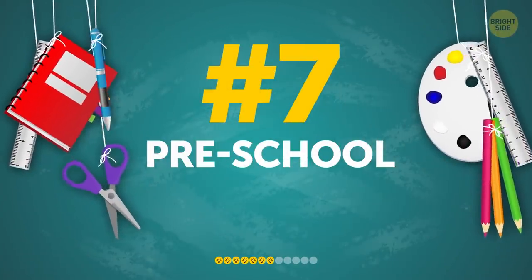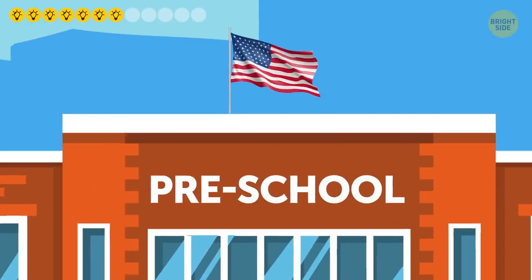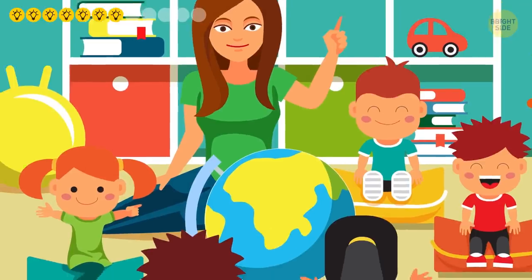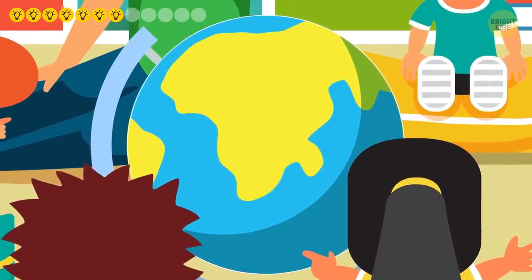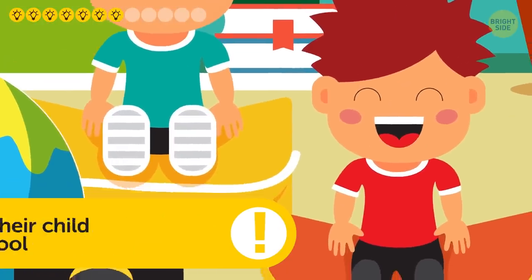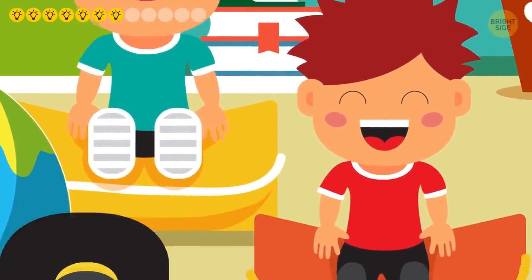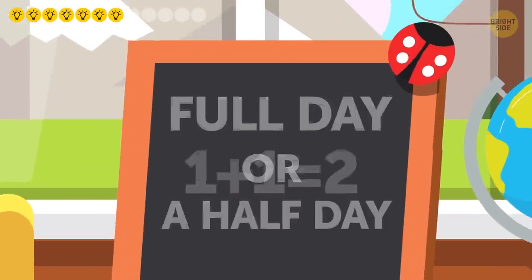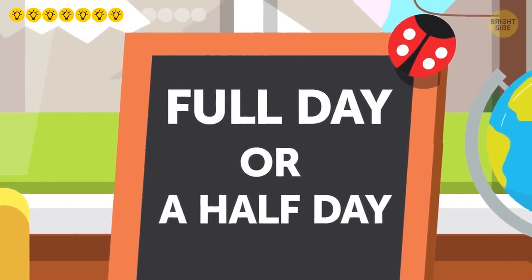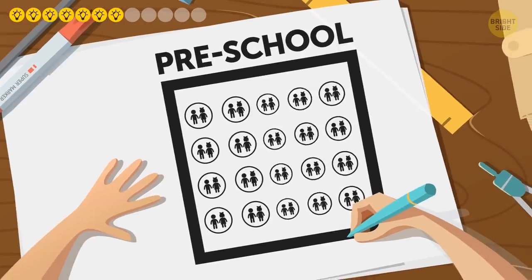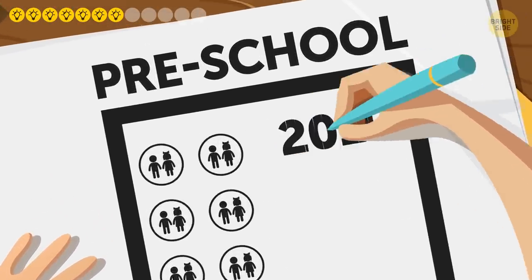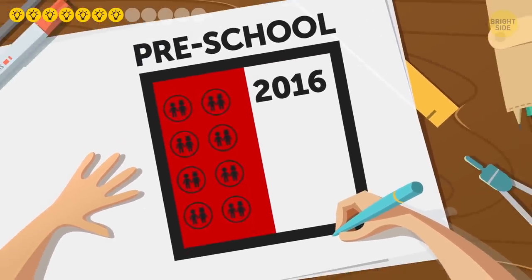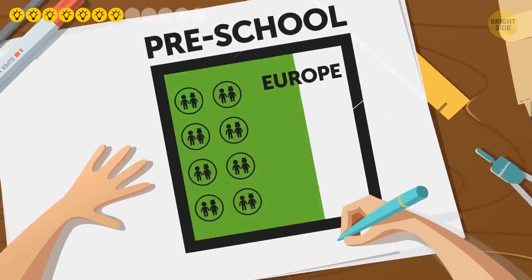Number seven: preschool. Earlier, I mentioned preschool being part of the American educational system. If US parents want their child to get ahead, or just to acclimate them to a social learning situation, enrolling their child in preschool at about 3 or 4 years old is considered ideal. It prepares children for kindergarten and gets them into a school routine. A choice of a full day or a half day is usually offered. But in the last few years, fewer and fewer 3-year-olds are being enrolled. In 2016, only about half of 3–5-year-olds were enrolled in some kind of full-day preschool program — a percentage much higher in European countries.